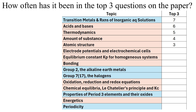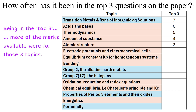Another way of organizing your revision priorities is to see how often a topic has been one of the top three most important questions on a paper — meaning those three topics had more marks available than any other topics that year. Transition metals and reactions of inorganic aqueous solutions has been in the top three topics seven times out of eight. Acids and bases has been one of the top three most important topics six times out of eight. Thermodynamics has been significantly important five of the eight times, and amounts of substance and atomic structure make up the rest of the top five.